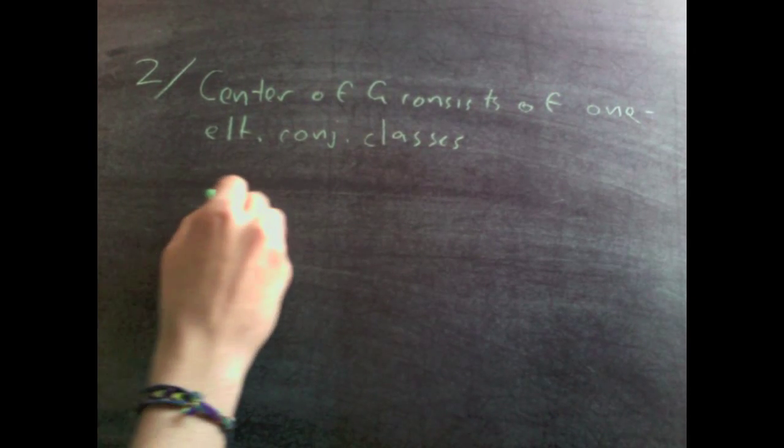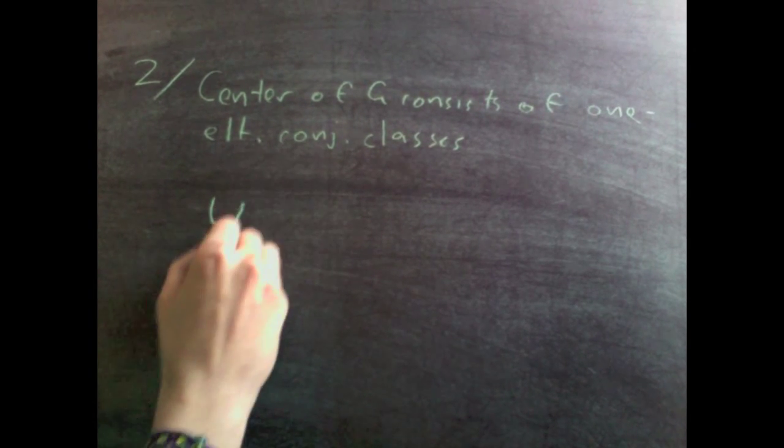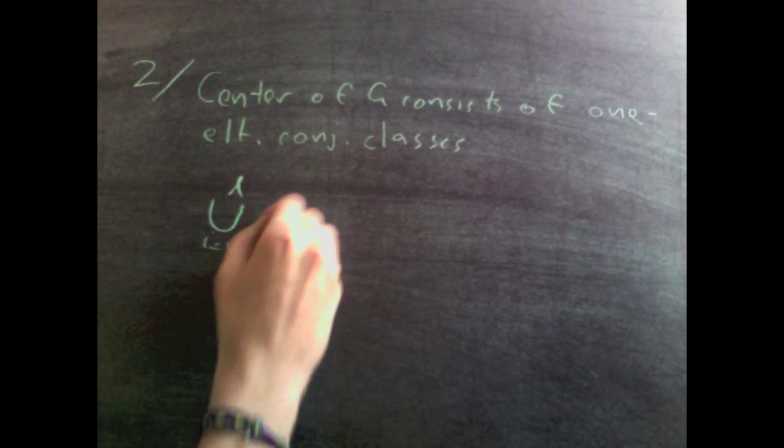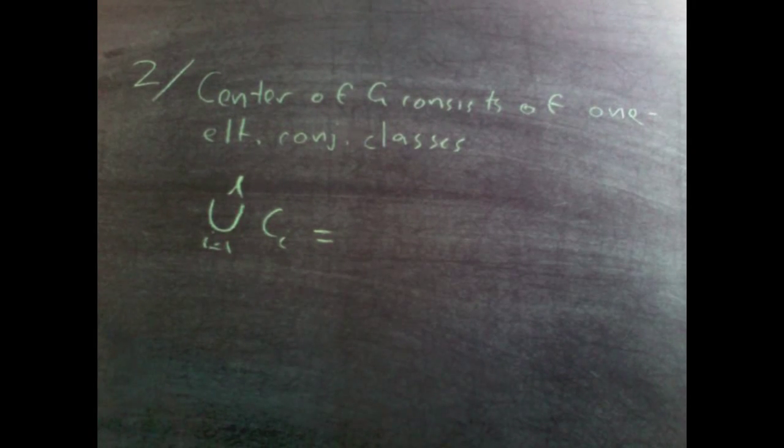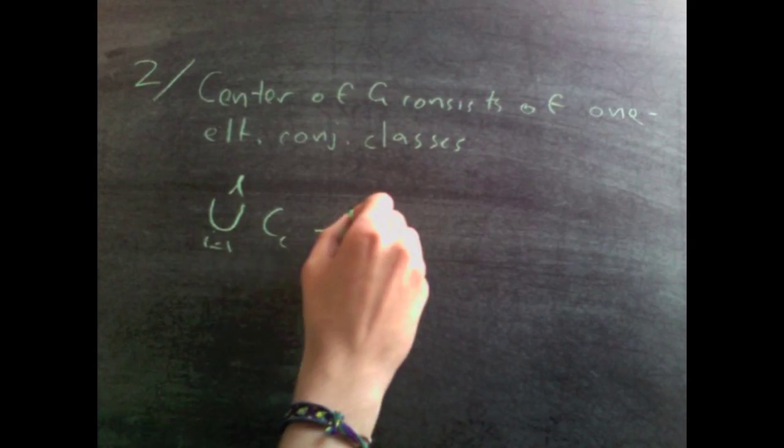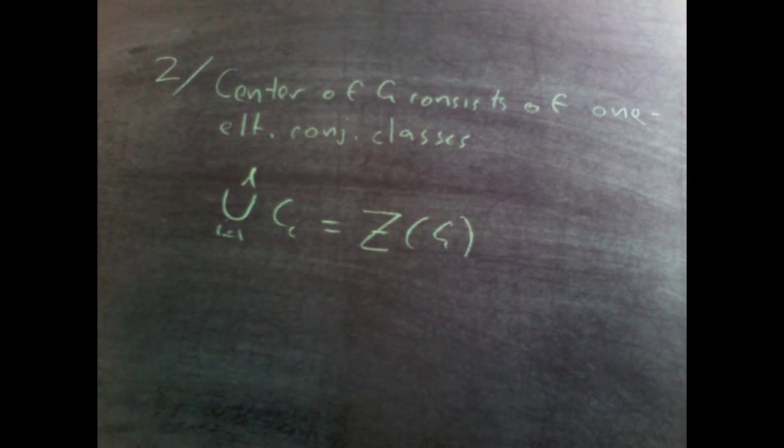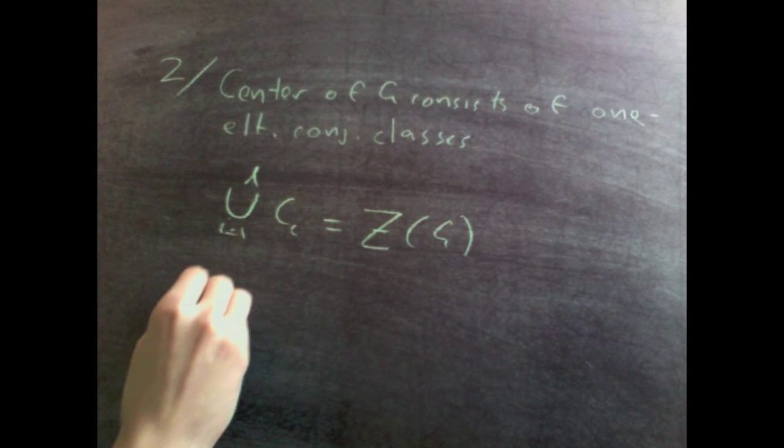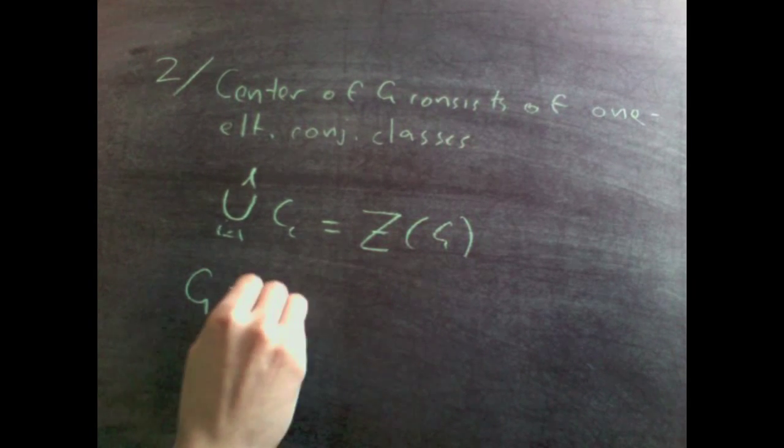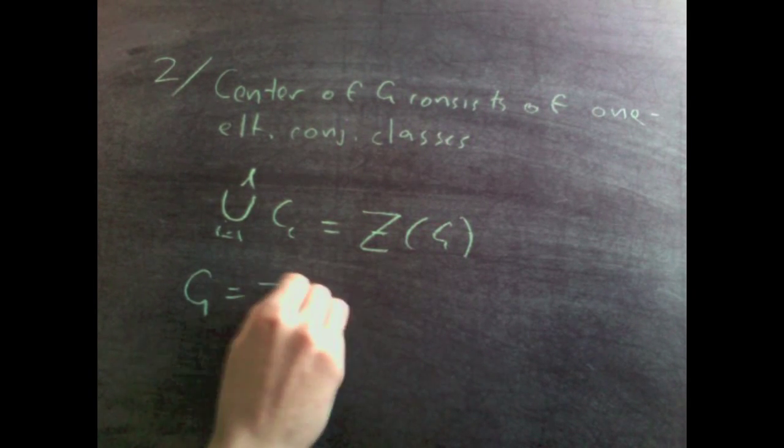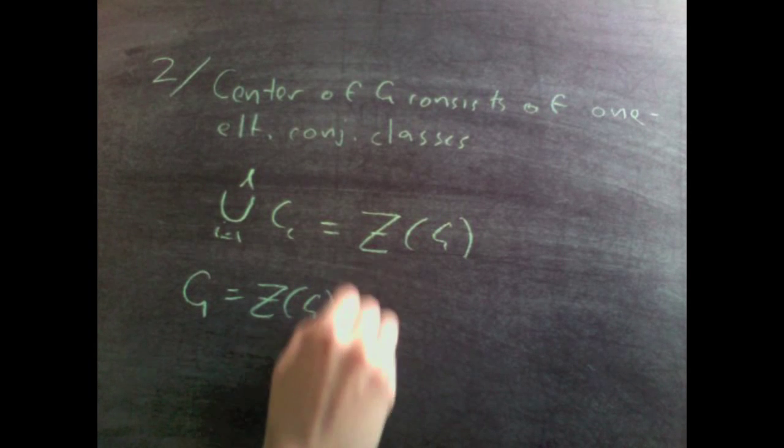And so we can write that the union from i=1 to l of ci, so the union of all our single element conjugacy classes, is equal to the center of g. Which means if we recall how we partition g, we can write g as the center of g.